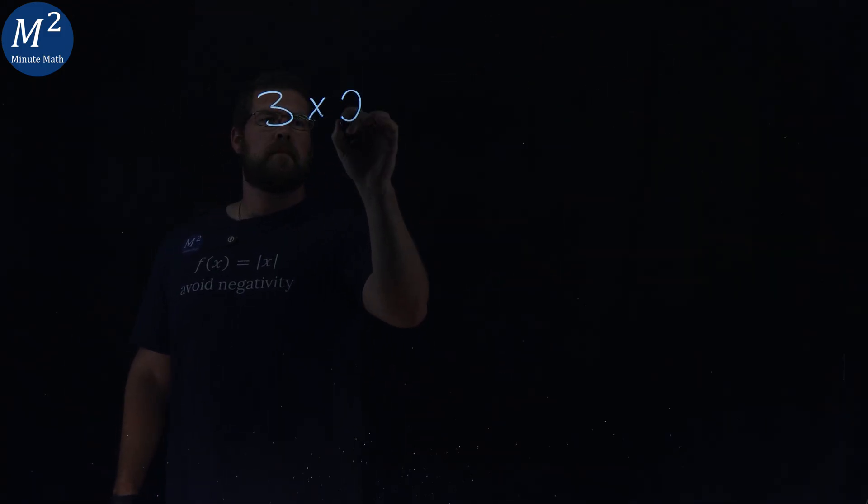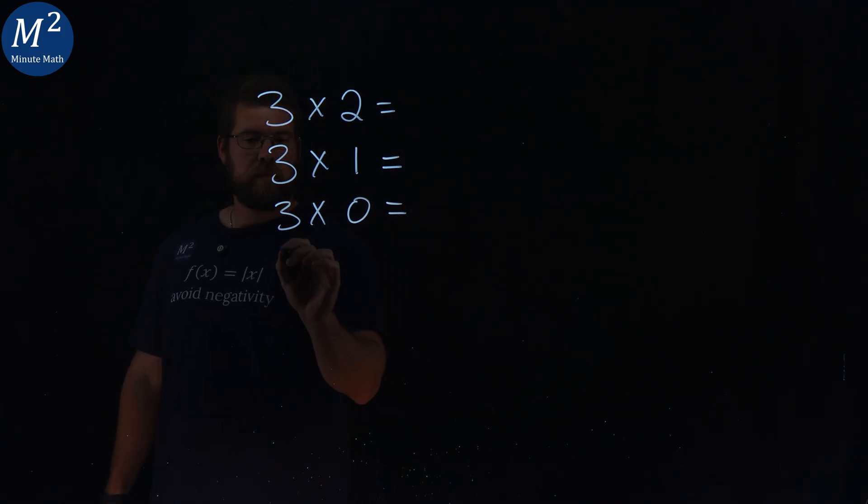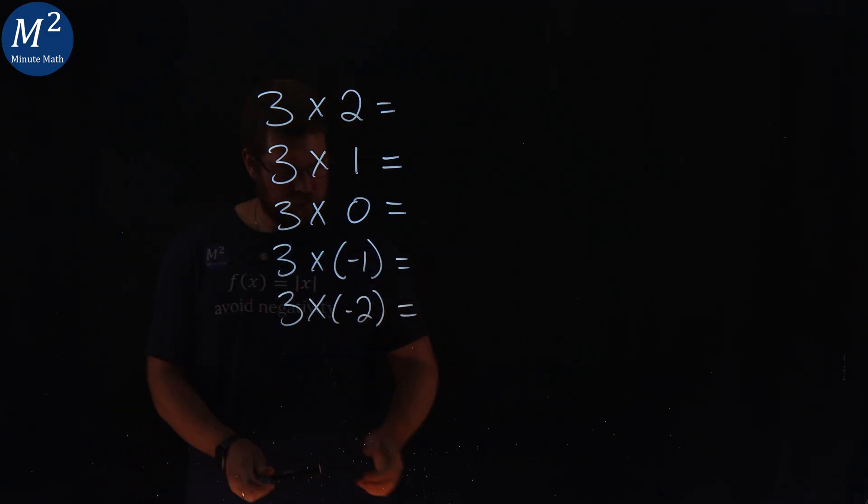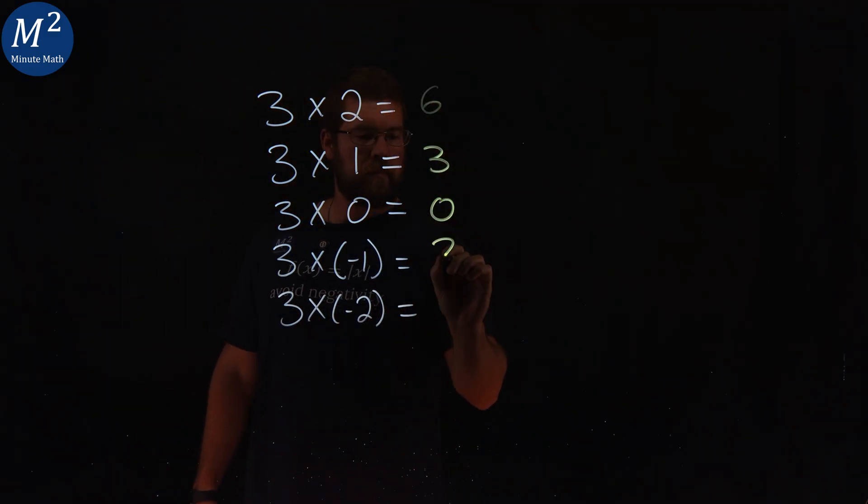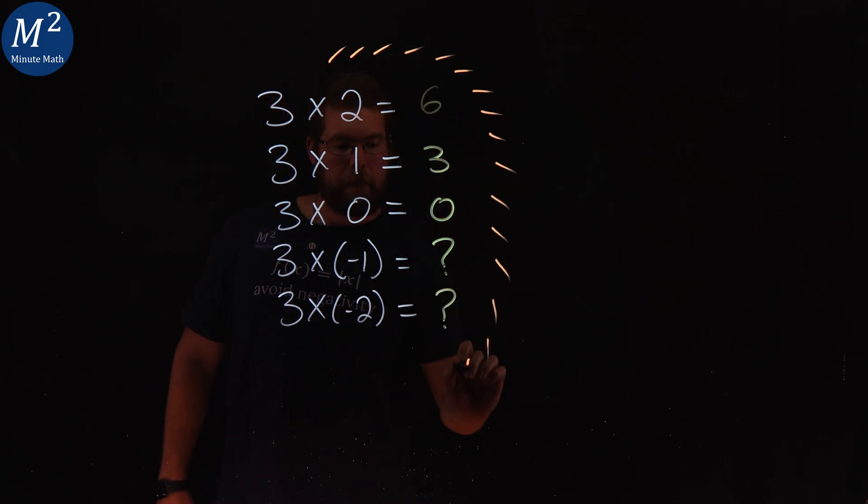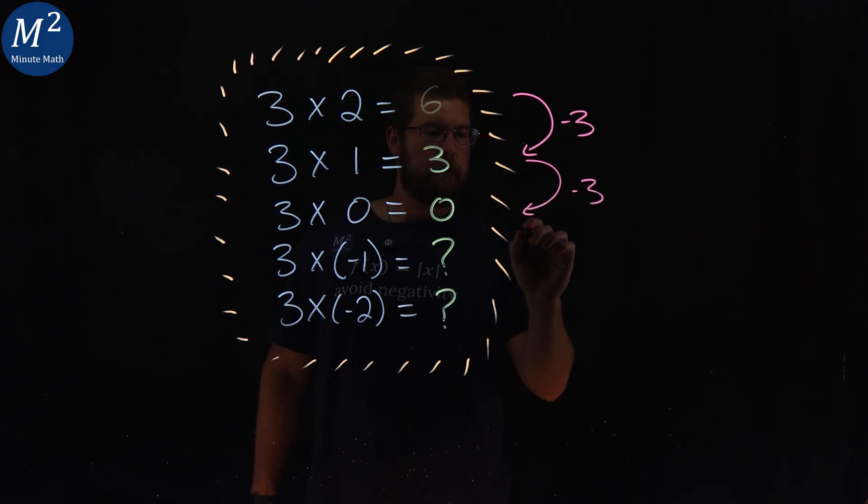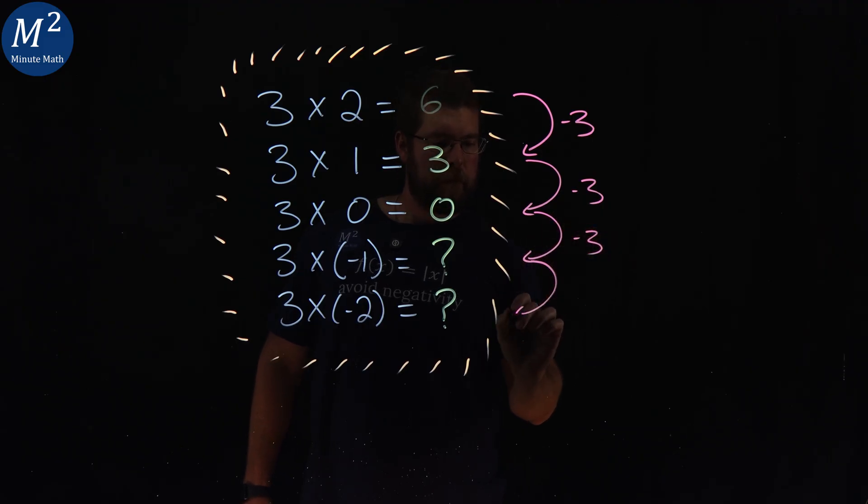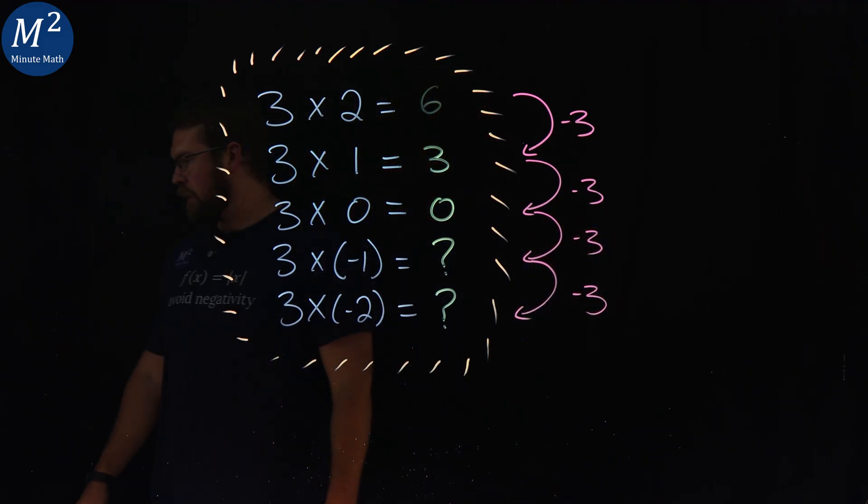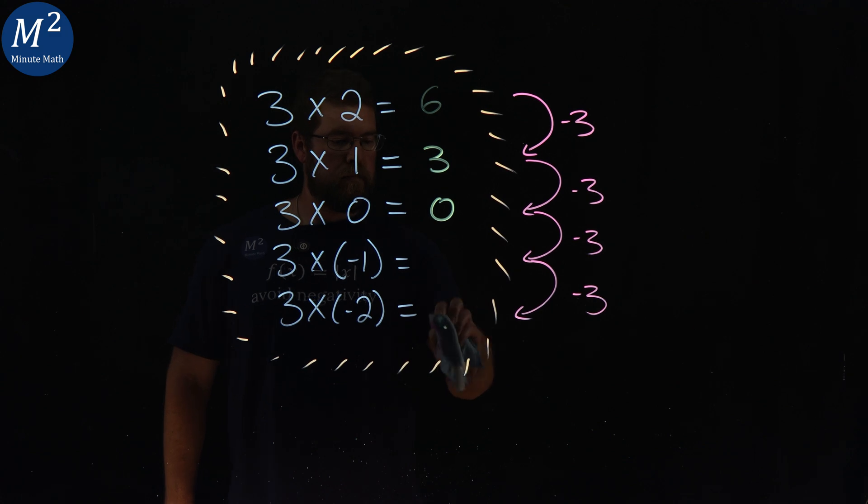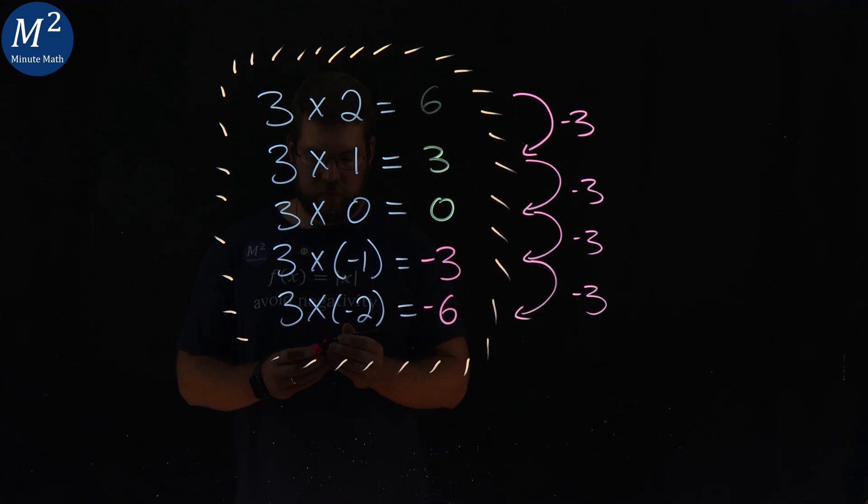Let's start with something we know. 3 times 2 is 6, 3 times 1 is 3, and 3 times 0 is 0. Notice how each time the second number goes down by 1, the product goes down by 3. Following that pattern, 3 times negative 1 must be negative 3, and 3 times negative 2 must be negative 6.